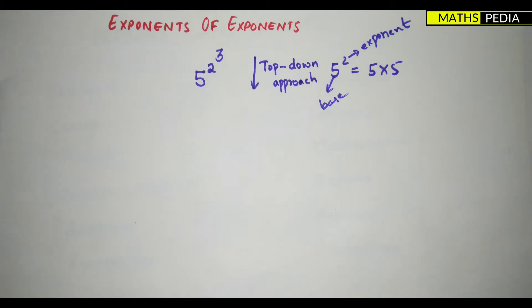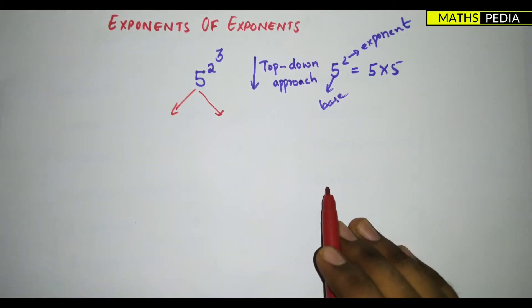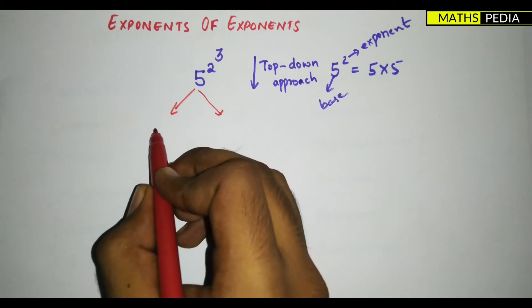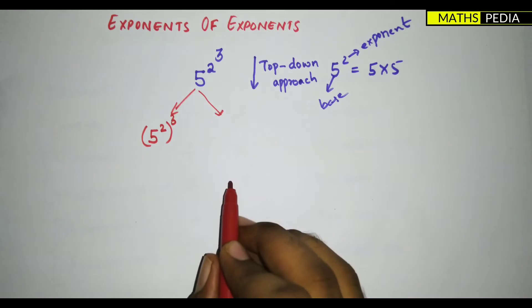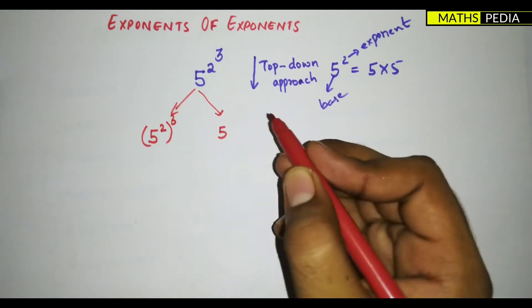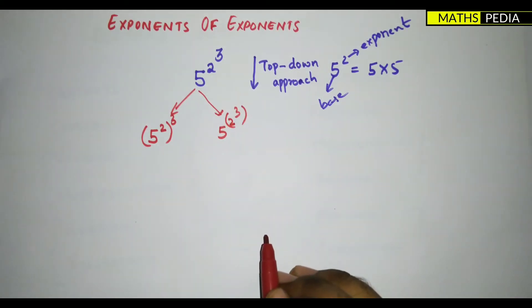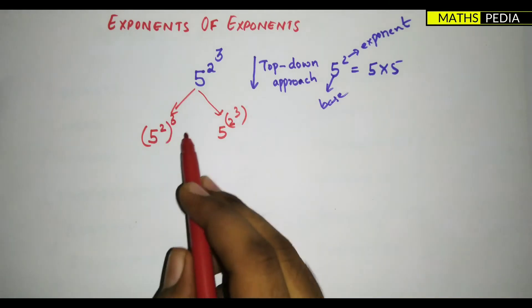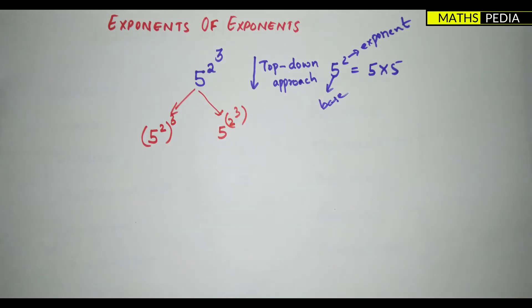Think of it this way — two people are solving this problem. One person considers it as (5²)³ — that is, 5 squared, whole to the power 3. The other person considers it as 5 to the power (2³). There is a clear difference between these two interpretations.